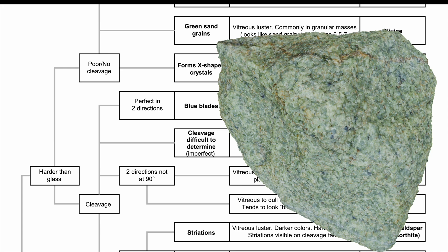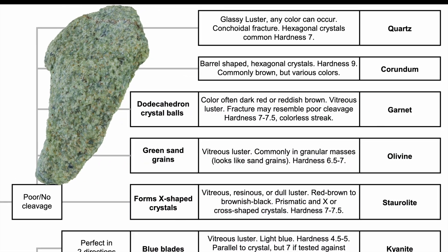The next thing we're going to look at is what's called cleavage. You can review my other videos for more in-depth descriptions of what this means, but the short answer is that cleavage is how the sample breaks. If it displays cleavage, then it breaks in a predictable way. If it does not display cleavage, then it breaks randomly. By looking at this sample, I don't see any predictable shapes or patterns, so it appears to have poor or no cleavage, and therefore we can narrow down our samples to this top portion of the chart.